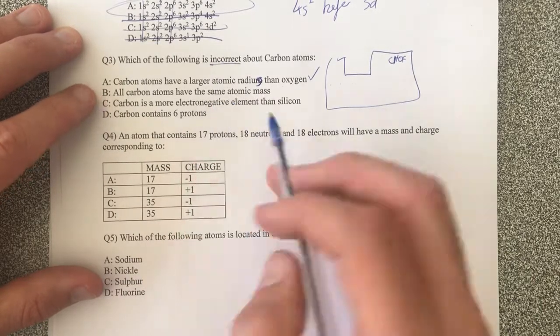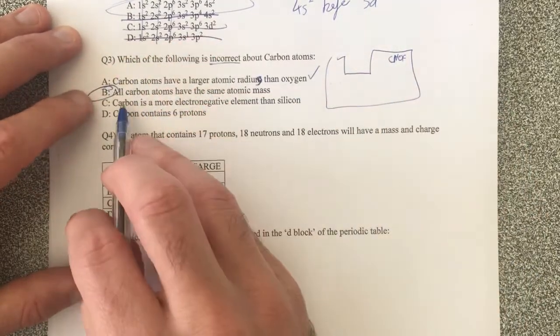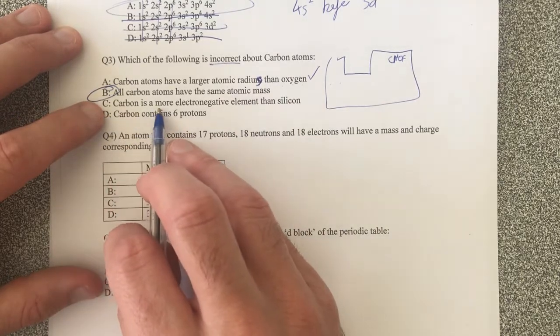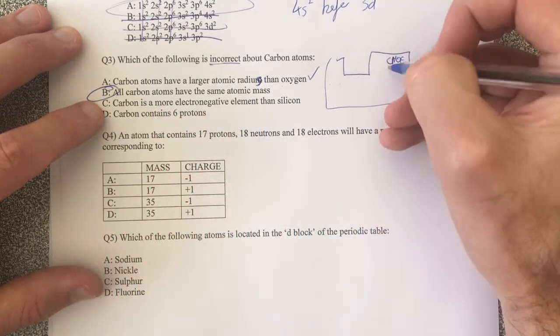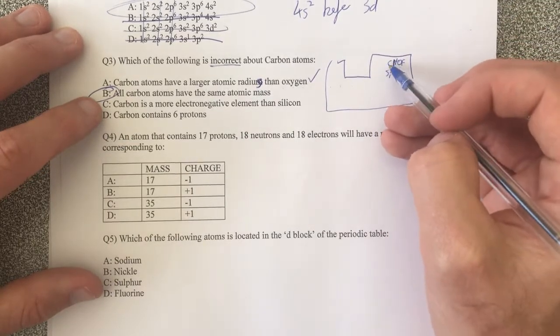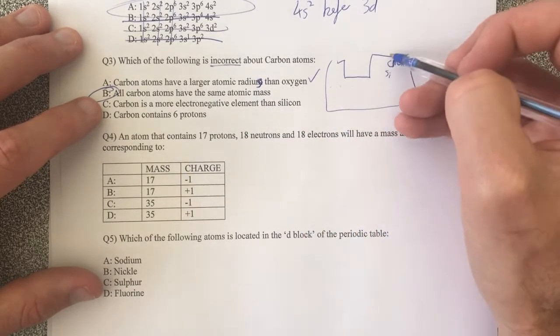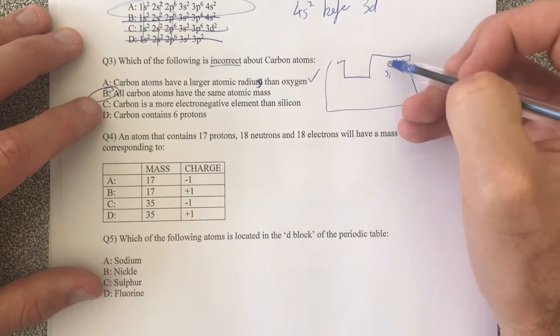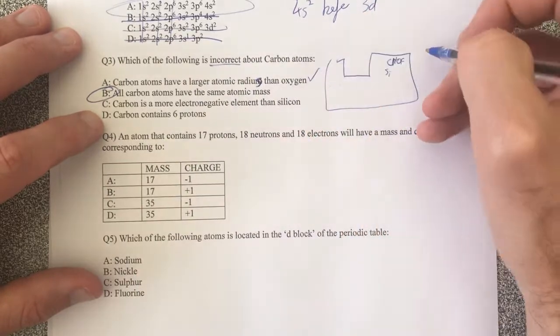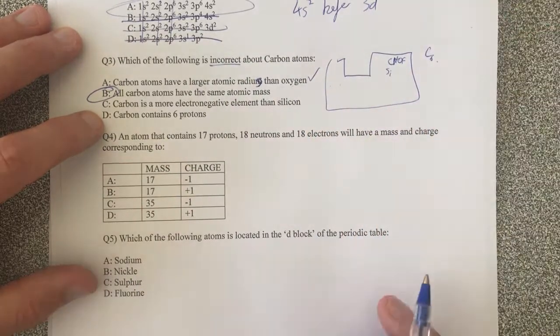All carbon atoms have the same atomic mass. That is incorrect because we have things called isotopes. So that's definitely incorrect. Carbon is more electronegative than silicon. Silicon sits below carbon on the periodic table. So therefore you would expect carbon to be more electronegative because as you move down a group, electronegativity decreases. Carbon contains six protons. That's true as well because it's carbon. Six is our atomic number.